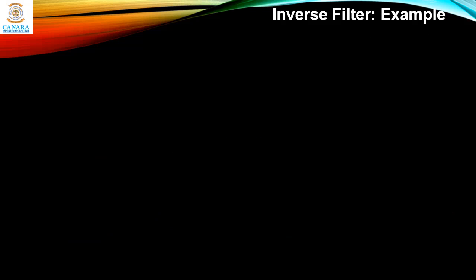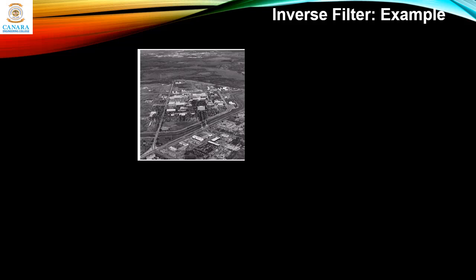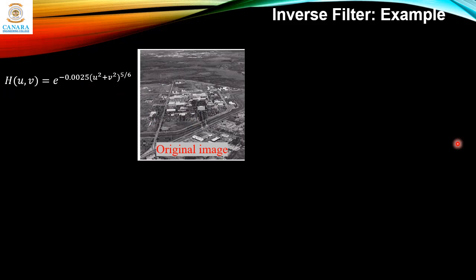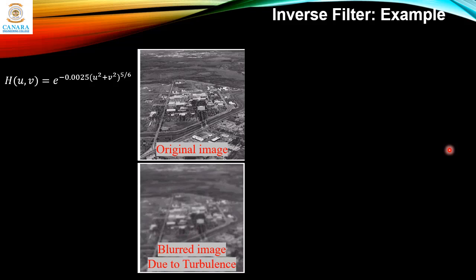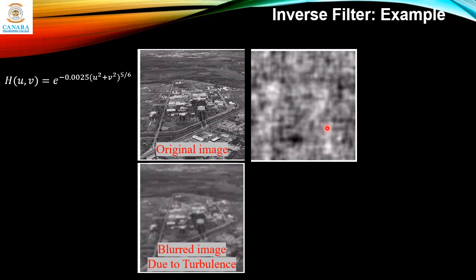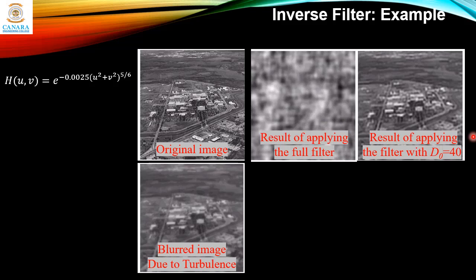Here is an example of applying the inverse filter. This is the original image, and to degrade it we apply the air turbulence model studied in the previous lecture. Once applied, the image becomes blurred. If we apply the full inverse filter, we get one result, and applying the filter with d0 = 40 gives another result.